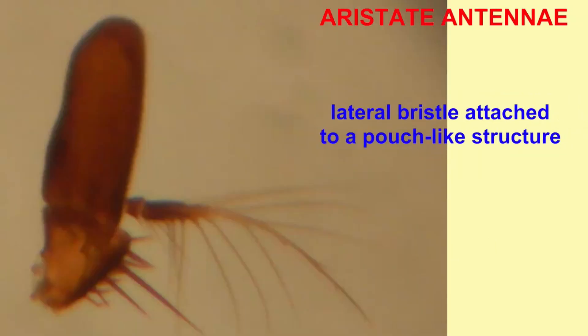In aristate antennae, a lateral bristle projects from a pouch-like structure. This is typical of many flies.